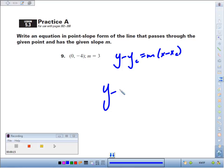y minus our y-coordinate they give us is negative 4, so we change that to a plus 4, equals our slope they tell us is 3 times the quantity x minus the x-coordinate, 0.